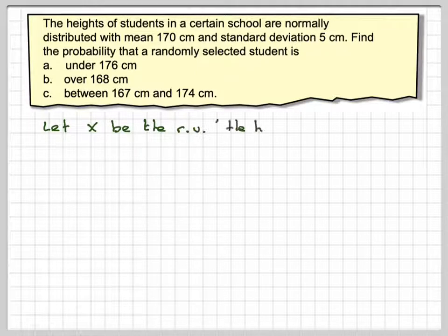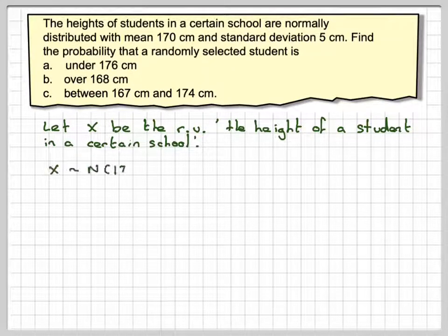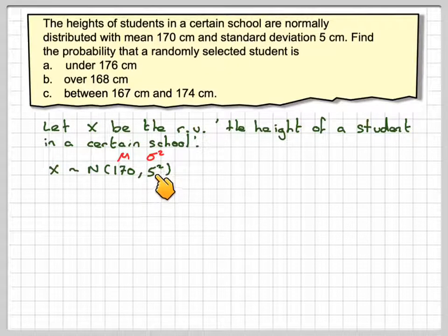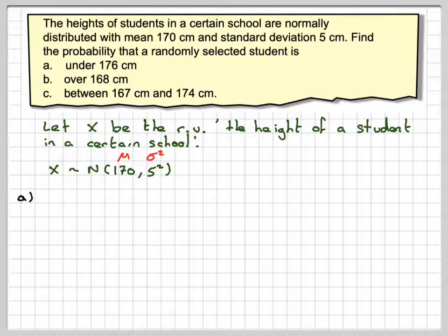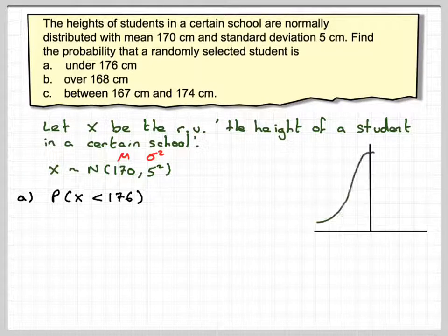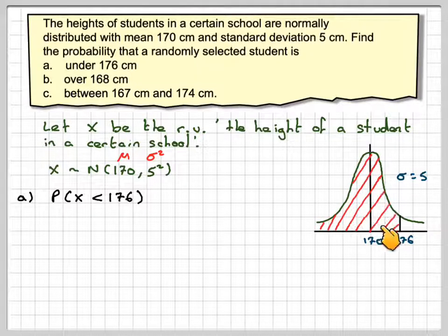If we let x be the random variable, the height of a student in a certain school, then x will be normally distributed and the parameters are mean and variance. But it's better to write it as the standard deviation squared, 5 squared. We require the probability that x is less than 176. If we draw a diagram, it would look something like that and we'd have to find that shaded region.